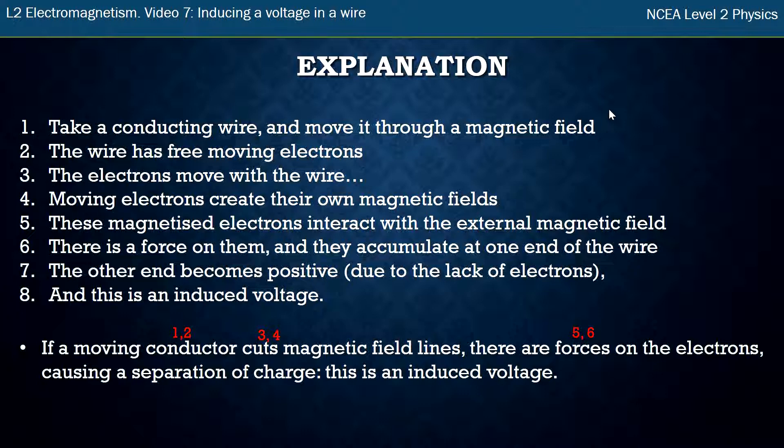So instead of having a really wordy explanation about the electrons making their own magnetic field, this magnetic field interacts with the external magnetic field, I've just said there's forces on the electrons. And then causes a separation of charge. Separation of charge means all the electrons move to one end and the positives stay at the other end. So you've got one end negative and one end positive. That's said much more succinctly as separation of charge.